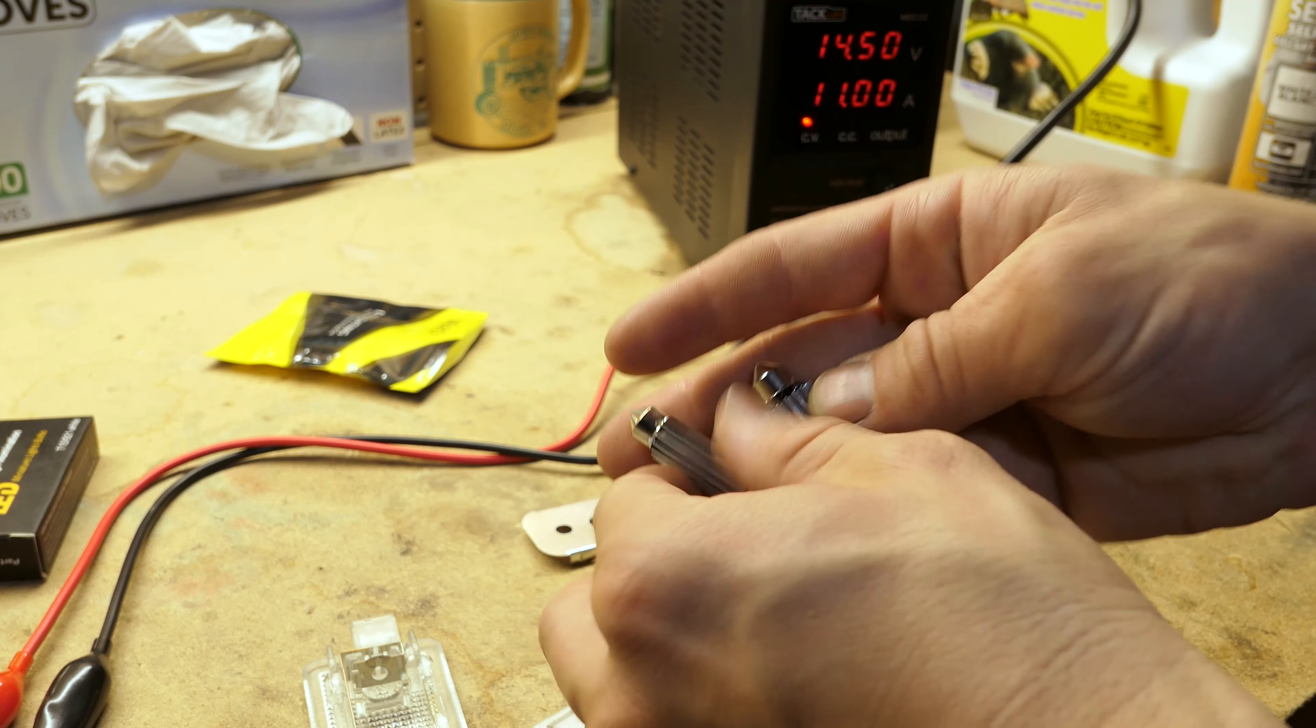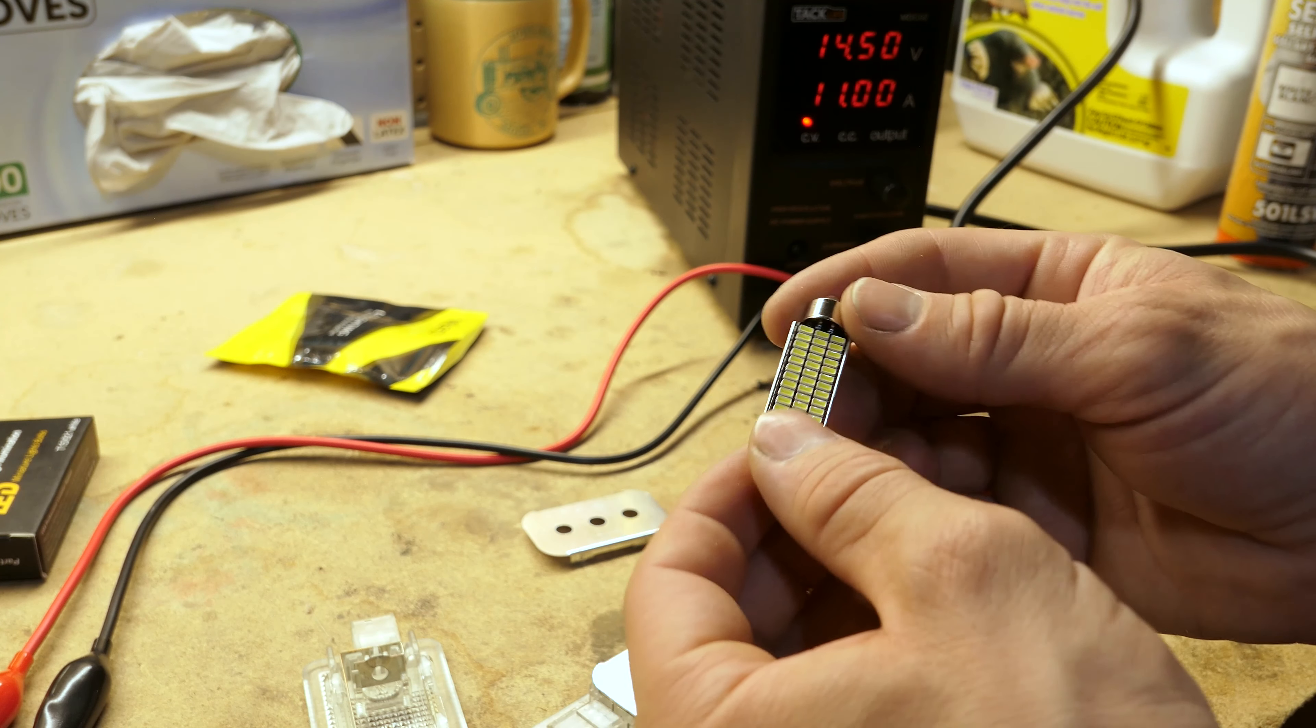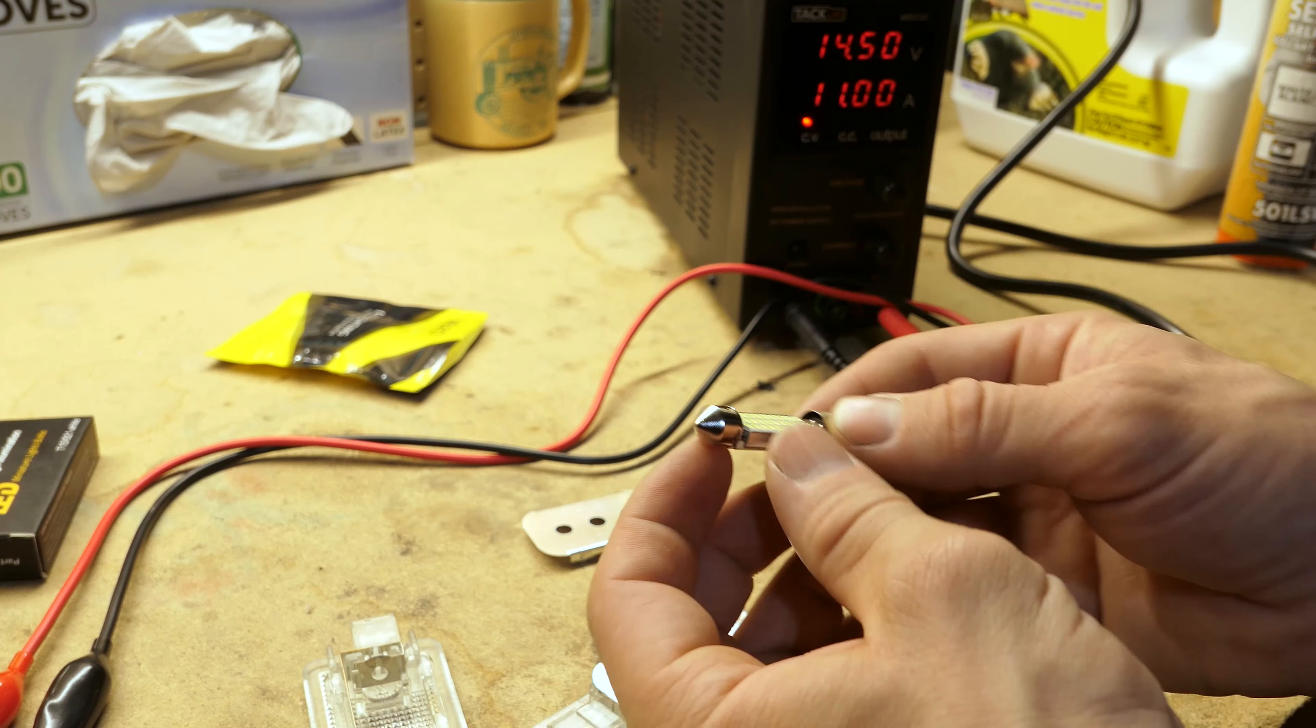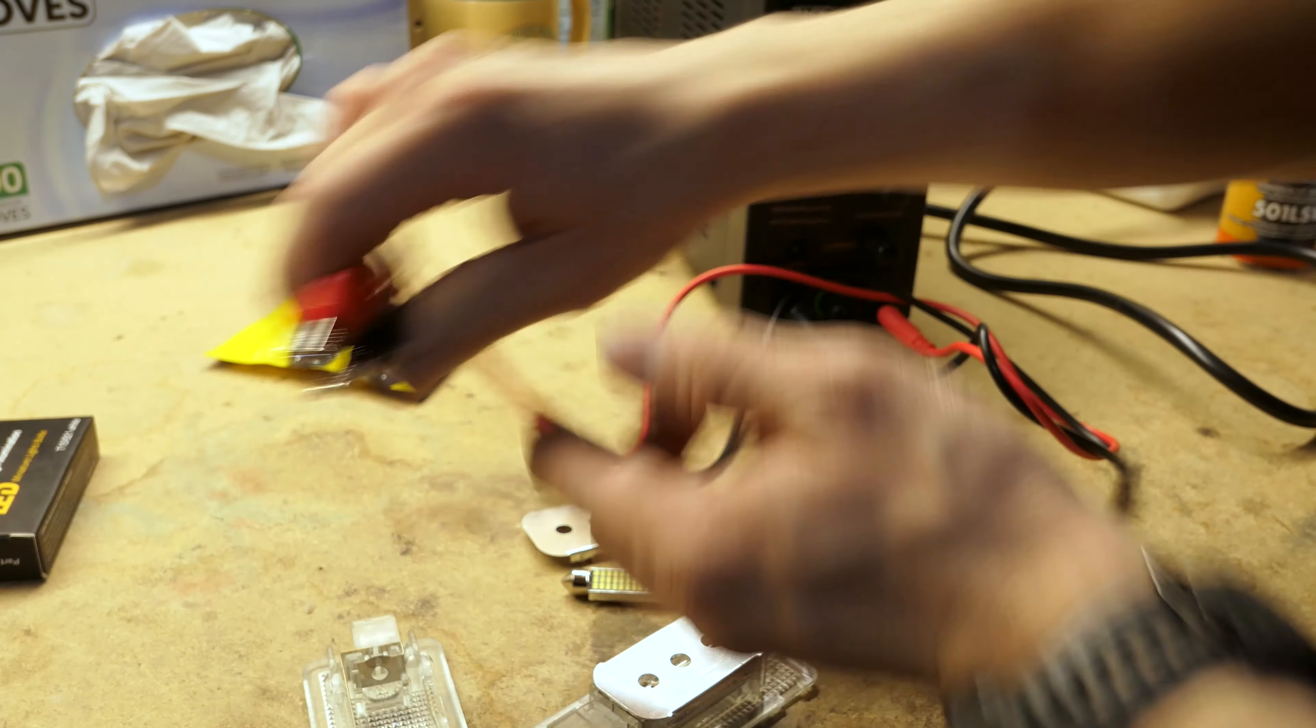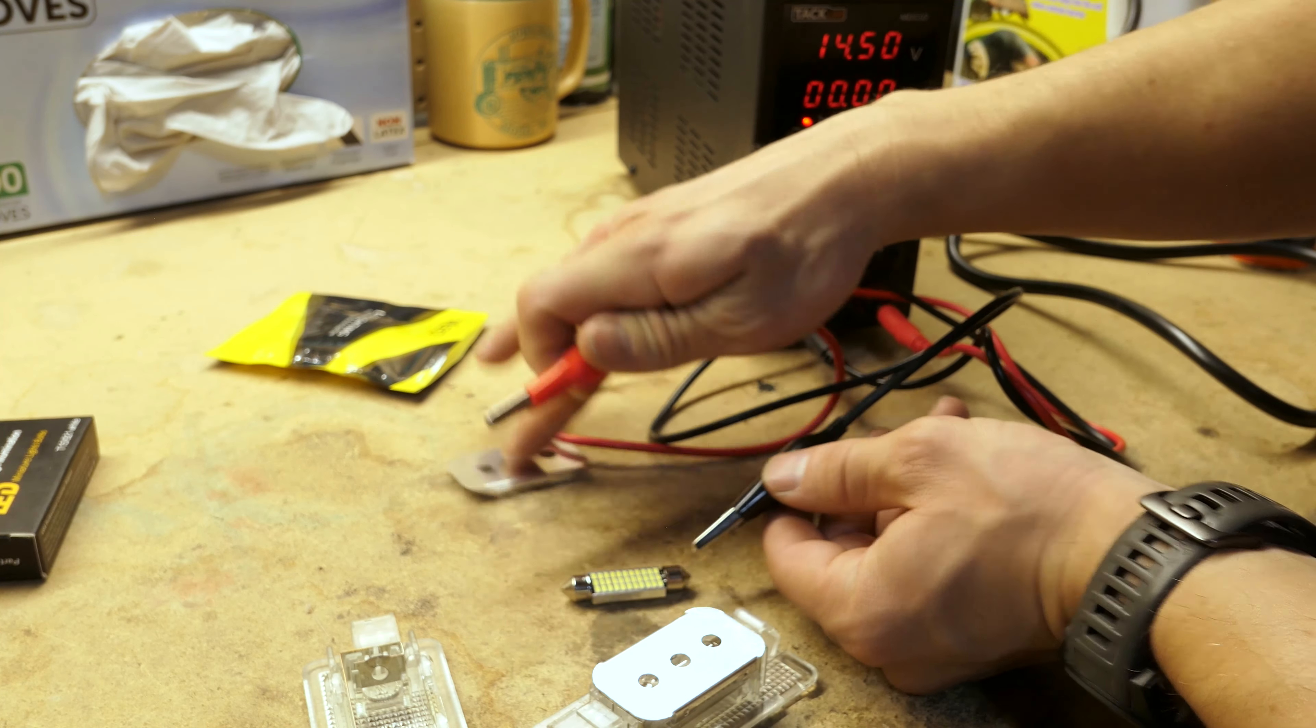They're pretty cool. They have a heat sink on the back and a bunch of these little LED chips. These LEDs have special circuitry in them that allow them to still work on reverse polarity just like a regular filament bulb.